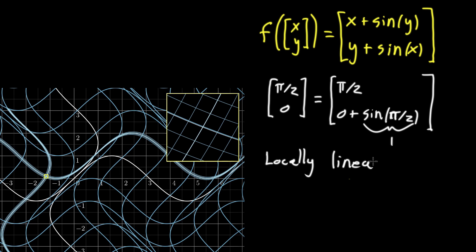Oh, I guess I should have written an R over here. Locally linear. So this raises the question, if we're looking around some specific point, which I'll call x0 and y0,